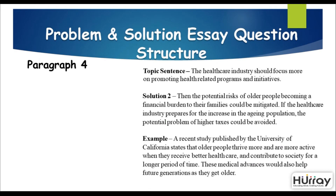In the fourth paragraph, give a second solution. The topic sentence could be: 'The healthcare industry should focus more on promoting health-related programs and initiatives.' If the healthcare industry prepares for the increase in the aging population, the potential problem of higher taxes could be avoided. For example, a recent study published by the University of California states that older people thrive more and are more active when they receive better health care and contribute to society for a longer period of time. These medical advances would also help future generations as they get older.